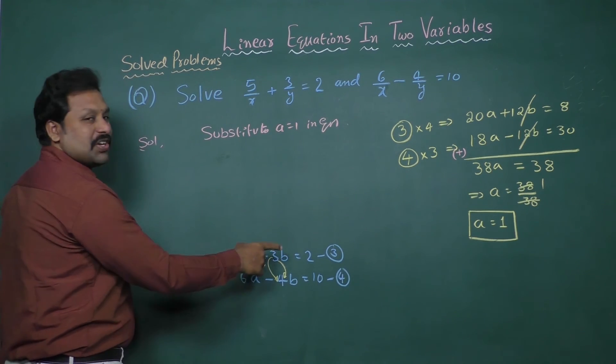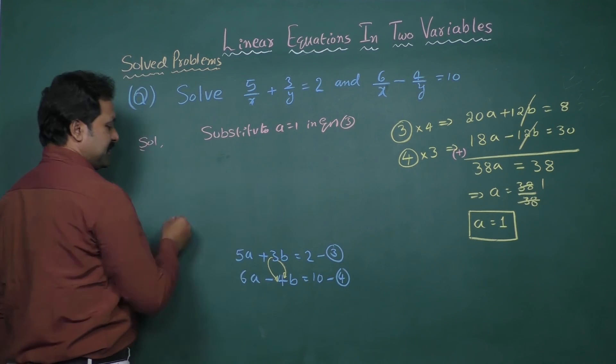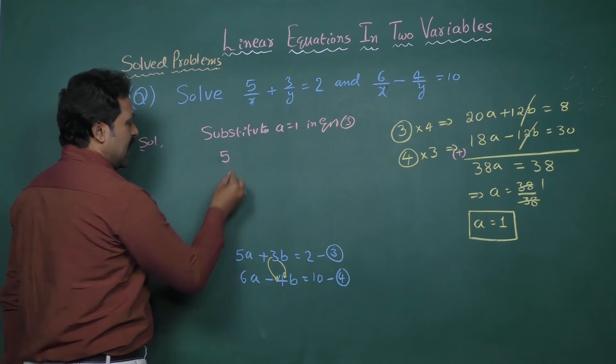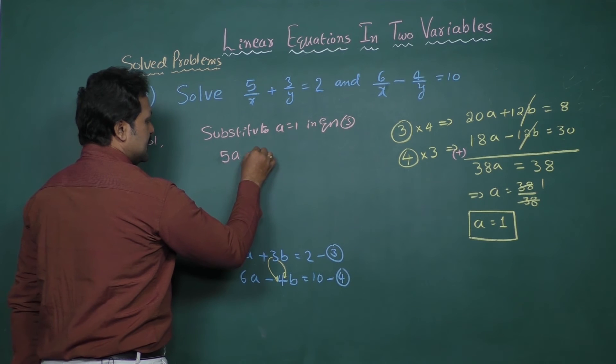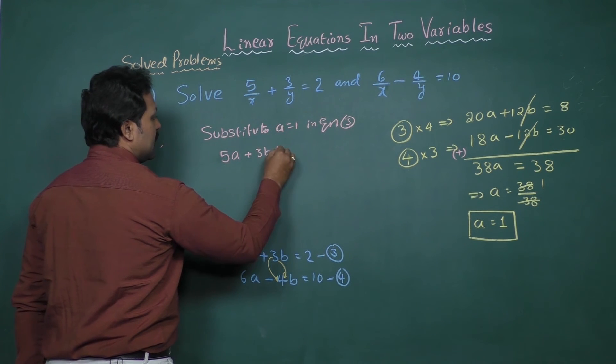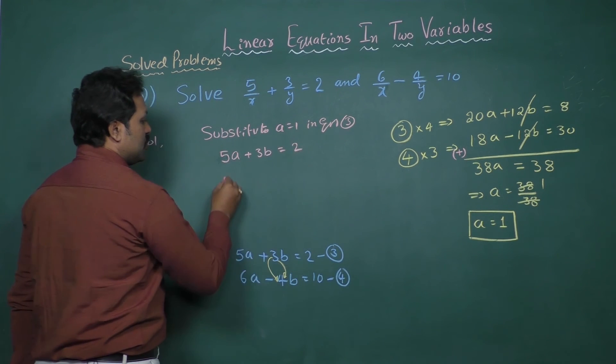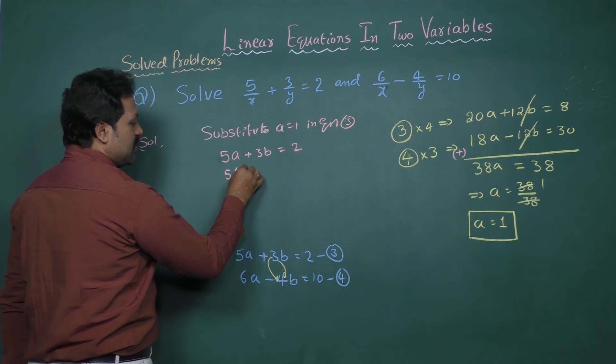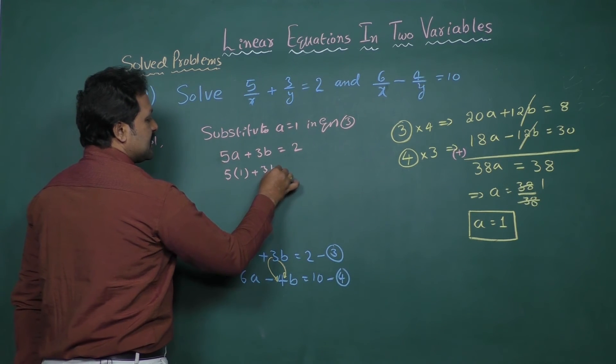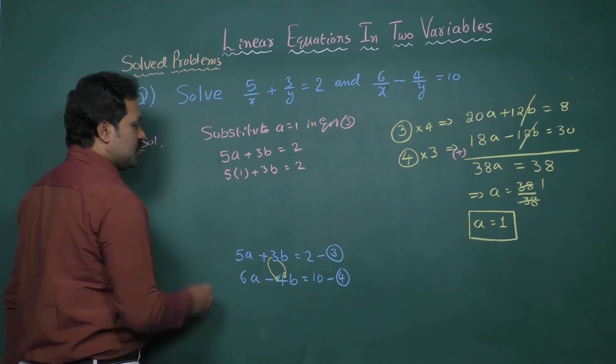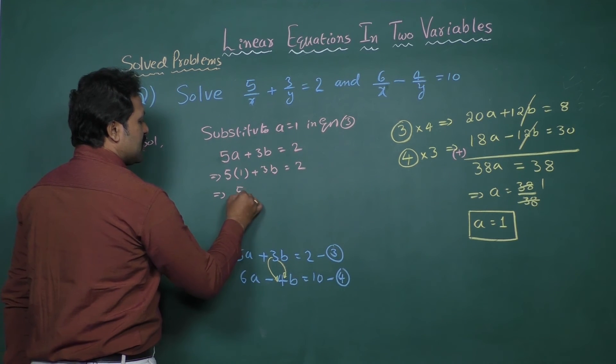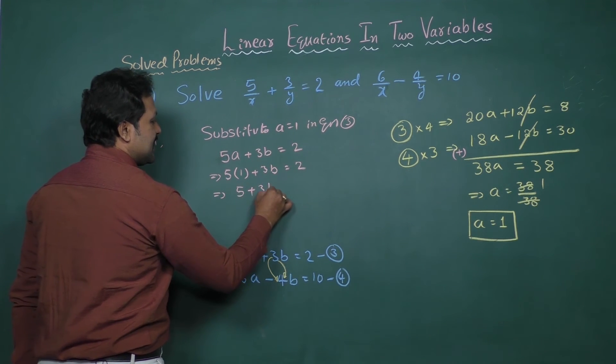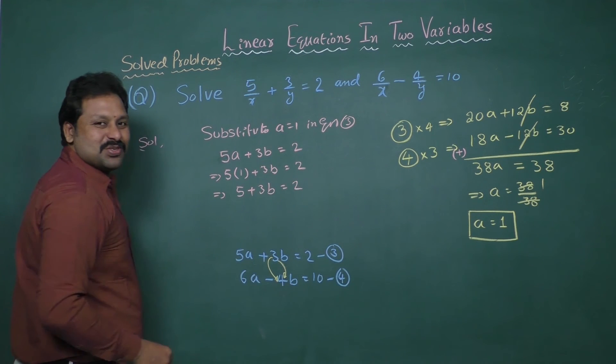In equation 3, 5a plus 3b equal to 2. So 5 into 1 plus 3b equal to 2. 5 plus 3b equal to 2.